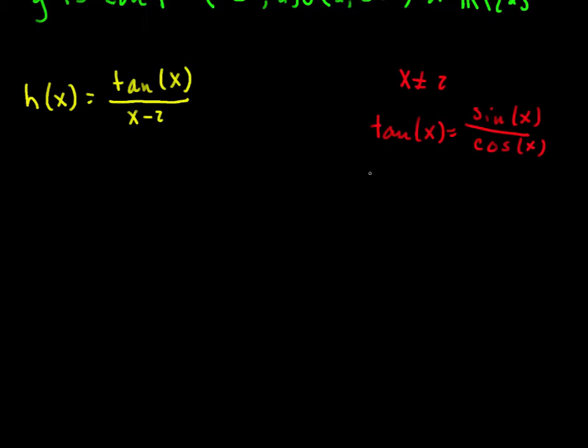So when is cosine 0? Well cosine is 0 whenever x looks like pi over 2 plus any multiple of pi. Or rewriting this, this is 2n plus 1 pi over 2. These are all the places where tangent is undefined and tangent is discontinuous at all these places.